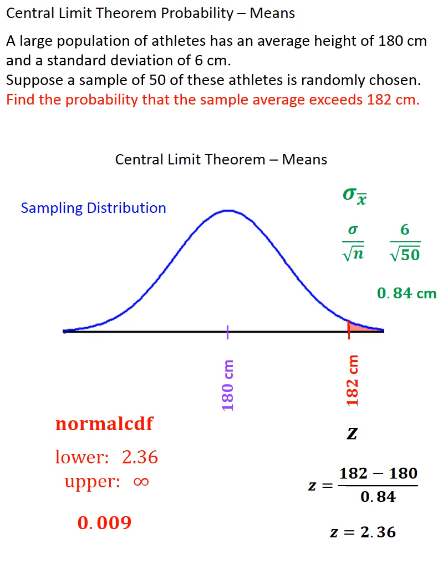Now I am done with this problem, but it's worth noting that as far as individual athletes in this population goes, many, many more than one percent of them have heights above that. But this question isn't asking the probability that an individual athlete would have a height that exceeds 182. Many of them do.